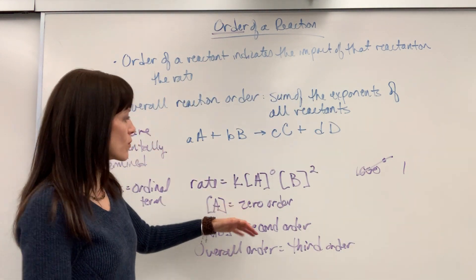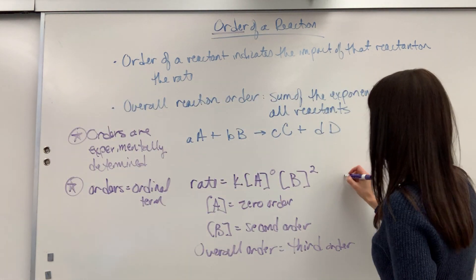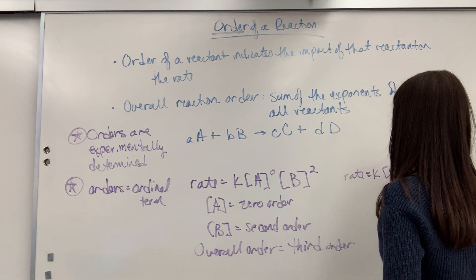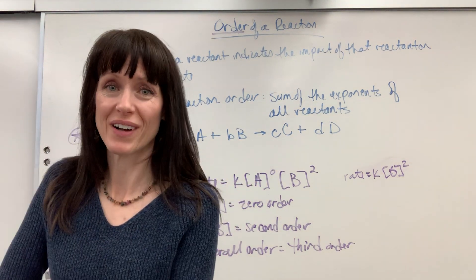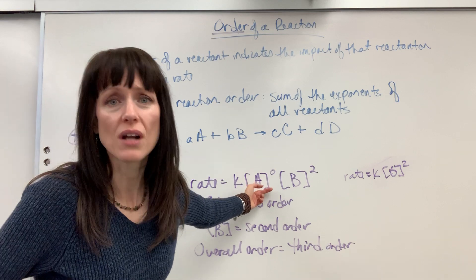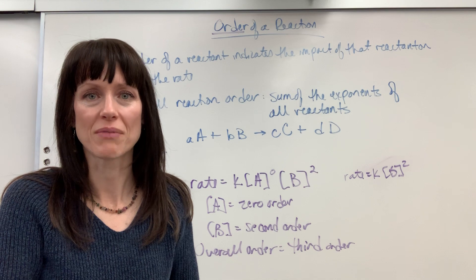If you have a zero order, you actually don't even have to write it down in the equation. I could rewrite this as rate equals K times the concentration of B to the second order. Because this is so cool on zero order. A zero order means you can change that concentration all you want. It can go up and down, up and down. Guess what?